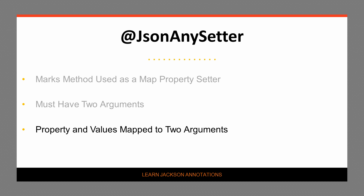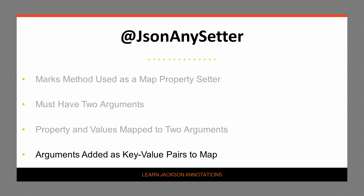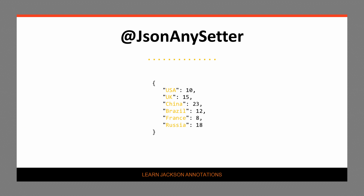During deserialization, the annotated method is called and the property and values of the JSON string are passed to the method. The method should then implement code that adds the key-value pairs to the map. In this JSON snippet, we have a map of country properties and associated delivery costs.